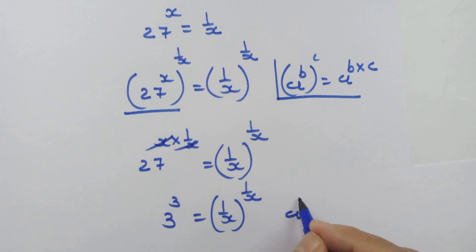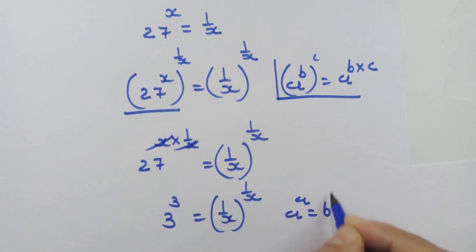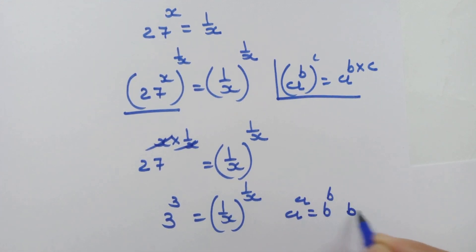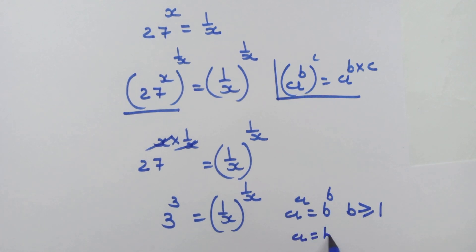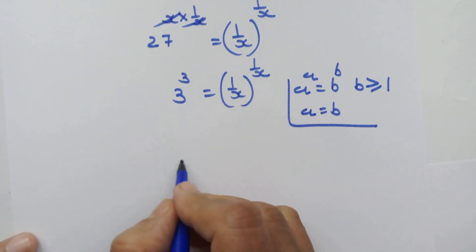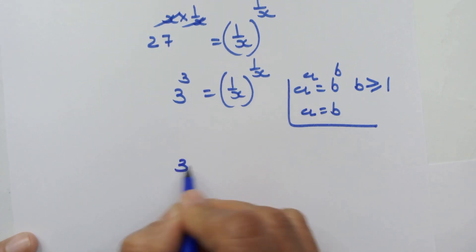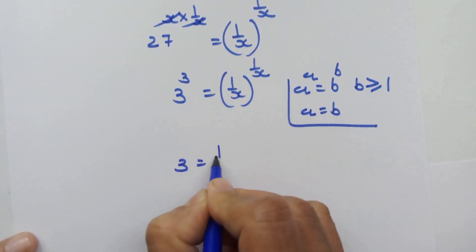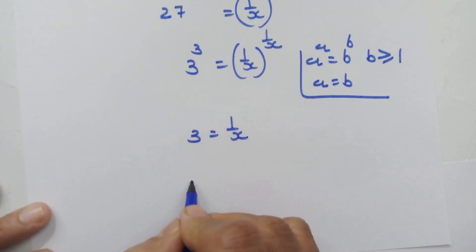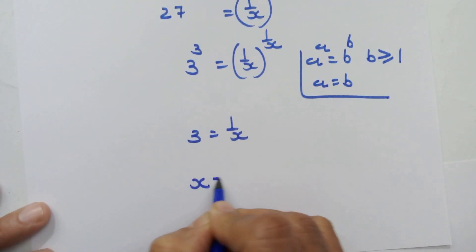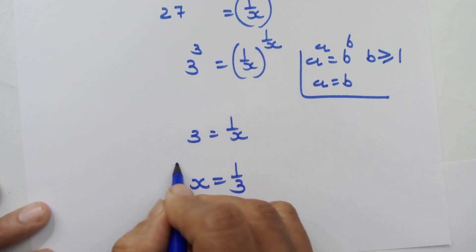Using the rule that if a raised to a equals b raised to b, where b is greater than or equal to 1, we can equate a equals b. Applying this rule here, we get 3 is equal to 1 upon x, so x is equal to 1 upon 3.